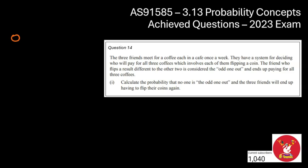So we are now onto question number 14, which is the last exam, or the last achieved question of this 2023 exam. So let's break down the question. So we've got three friends. So three is a number, so I'll probably underline that. They meet for a coffee at a cafe once a week. The system they have for deciding on who will pay for the all three coffees is them flipping a coin. So it sounds like all three of them are going to flip a coin. The friend who flips the different result to the other two will be considered the odd one out, and they've got to pay for all three coffees. Calculate the probability that no one is the odd one out, and the three friends will have to flip the coin again.